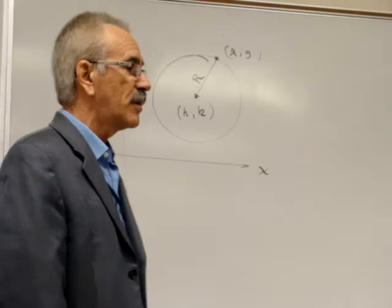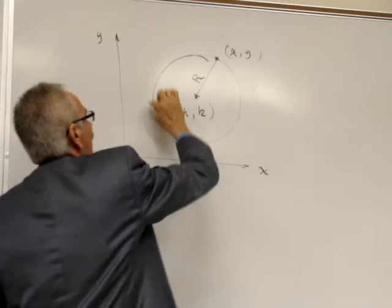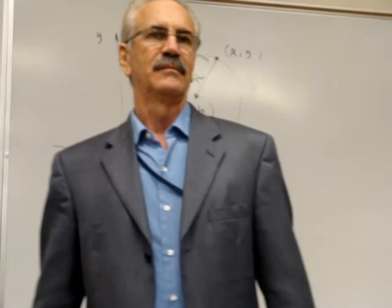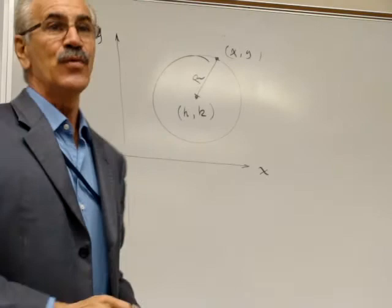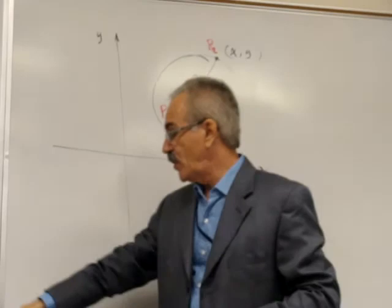The circle is a line equidistant to one point. The same distance everywhere, an equidistant line to one point called the center. If this is true and you understand this definition, you can write the distance between this P1 and this P2 using similar notation we developed before. So please do that and you will discover by yourself how to write the equation of the circle.